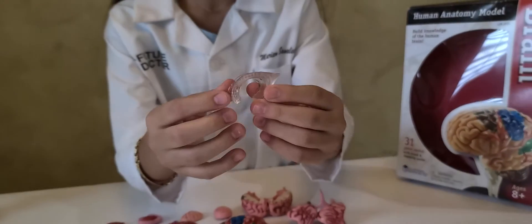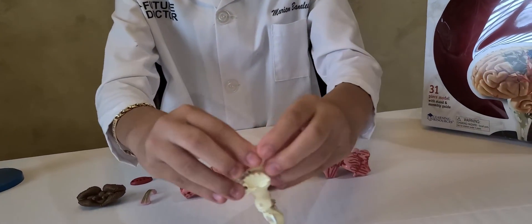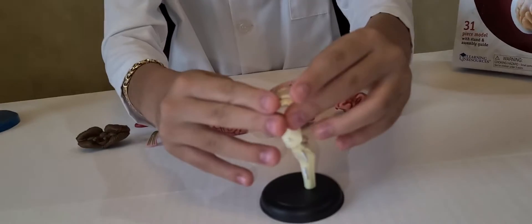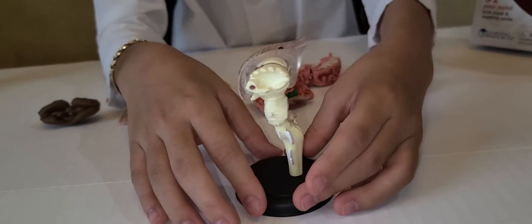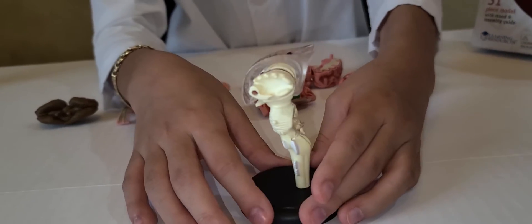The next piece, which is this one, is called the ventricles and I will place them right here. The ventricles are the hollow chambers that contain cerebrospinal fluid, allowing it to move around the brain.